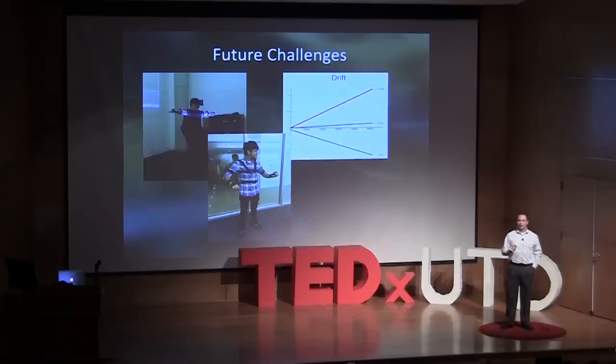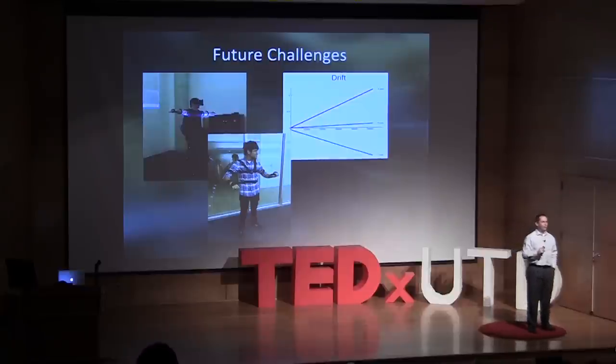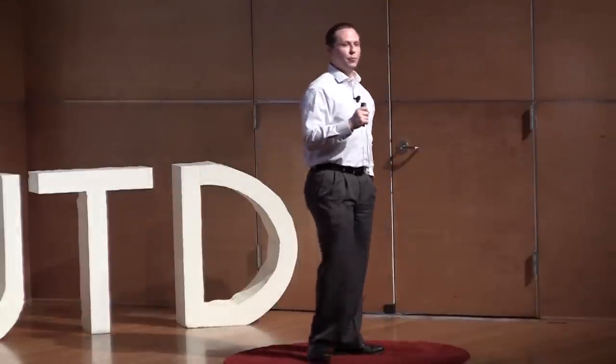Currently, we use 17 IMU sensors for tracking, which takes about five minutes to put on. You might be willing to do it the first time to experience immersive virtual reality, but not on a daily basis. One way we're planning to address this is to integrate the sensors into articles of clothing — upper body sensors into a jacket, lower body sensors into coverall pants — so you only have to put on two articles of clothing instead of 17 sensors.